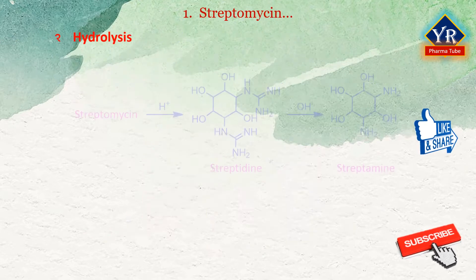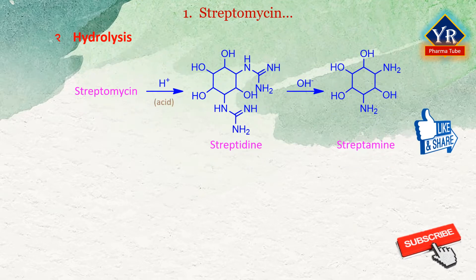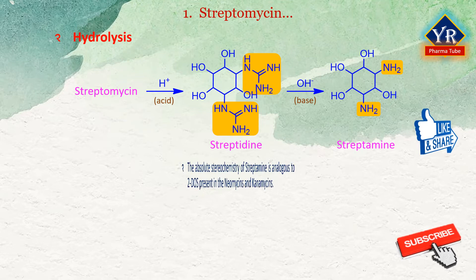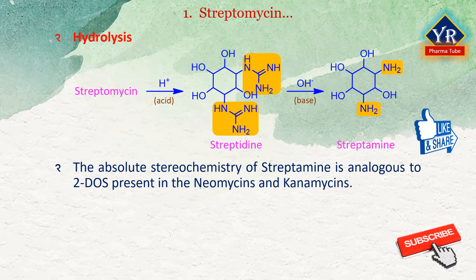Streptomycin undergoes hydrolysis at appropriate acidic conditions to give a diacidic base known as streptidine. Streptidine on alkaline hydrolysis is first converted to a urea derivative and then into the amine called streptamine, which is a meso compound. The absolute stereochemistry of streptamine is analogous to the 2-deoxystreptamine unit present in the neomycins and kanamycins.